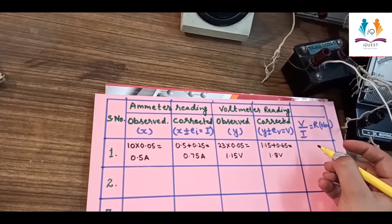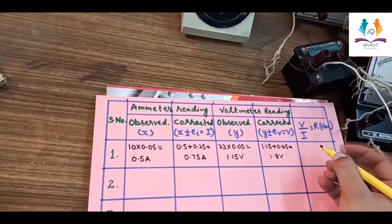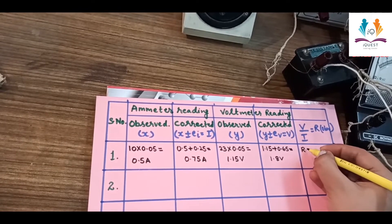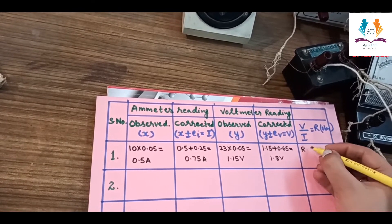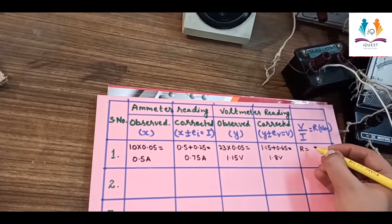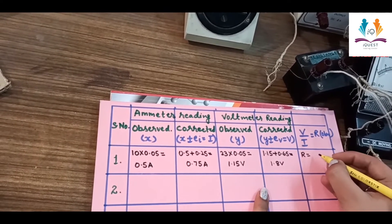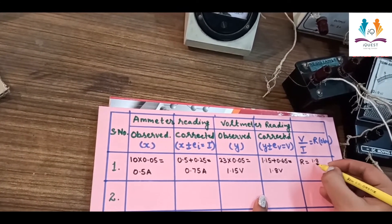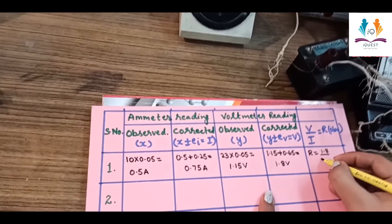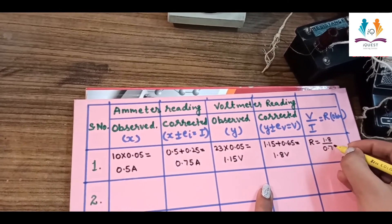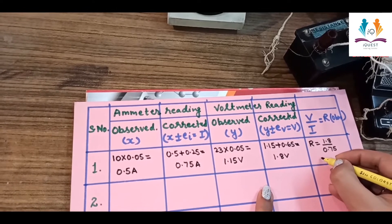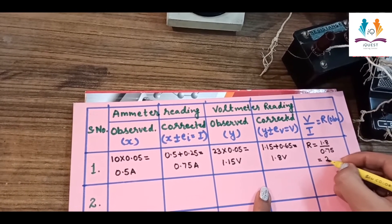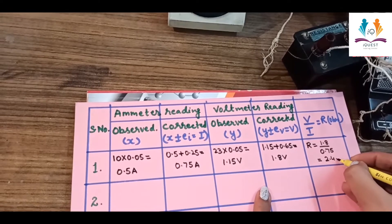Now for this reading we find the resistance using the formula R equals V upon I. The voltmeter reading is 1.8 volt and the current reading is 0.75 ampere. Dividing gives 2.4 ohms.